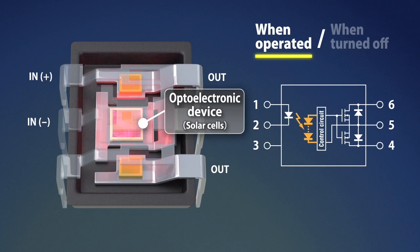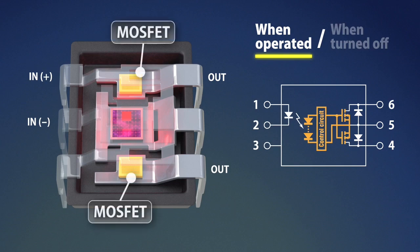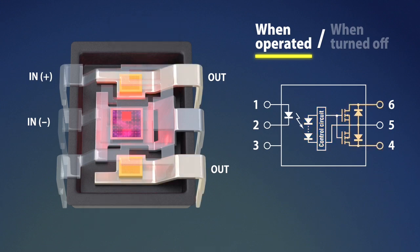The photoelectric element converts the received light to electric power corresponding to the quantity of light. This electric power passes through a control circuit and charges the MOS FET gate on the output side. When the gate voltage of MOS FET supplied from the photoelectric element reaches a certain voltage, the MOS FET begins to conduct and turns on the load.